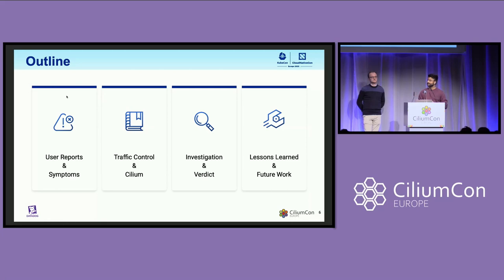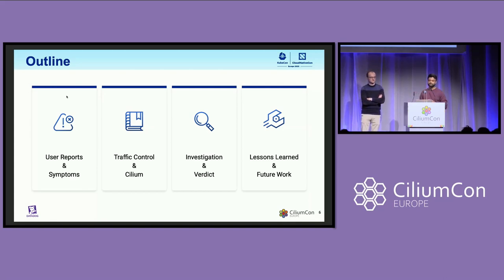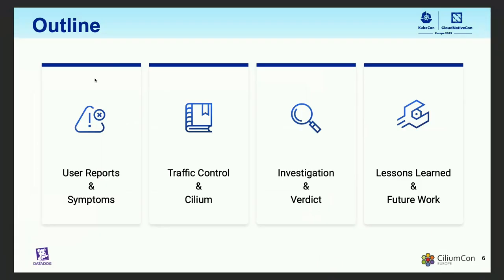Here's a quick outline of what we are going to talk about today. We're first going to talk about how our users noticed this issue. We'll cover some quick background on Linux traffic control and how Cilium and Datadog Agent use traffic control. Then we'll get into the core of the investigation and some of the lessons we learned during the process.